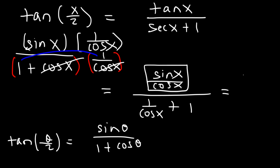Sine divided by cosine is tangent, and 1 over cosine is secant. And we're not going to change this one, we're just going to rewrite it. So now we have verified the identity.